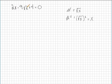So instead of having the radical in there, we can have an equation that looks like this: 2u squared minus 9u plus 4 equals 0. Much easier to solve.